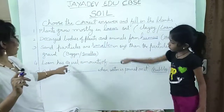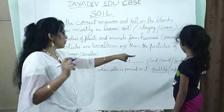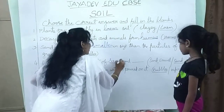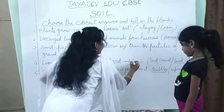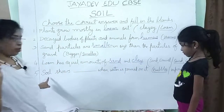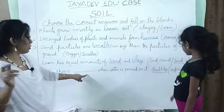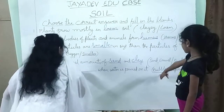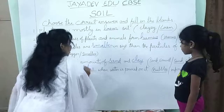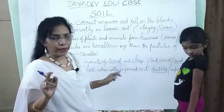Fourth: loam has equal amounts of sand and clay. Fifth: soil shows bubbles — B-U-B-B-L-E-S — when water is poured on it. Thank you.